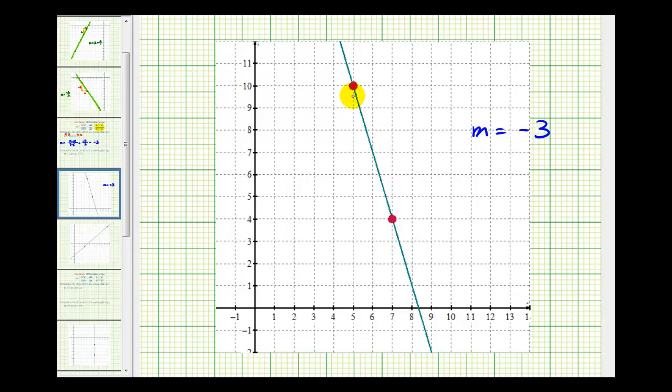Notice how the vertical change would be down one, two, three, four, five, six units, and right two units. So we'd have a vertical change of negative 6 and a horizontal change of positive 2. The ratio would be negative 6 to positive 2, which does simplify to negative 3, which is our slope.